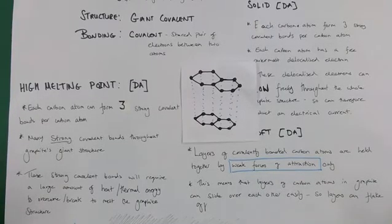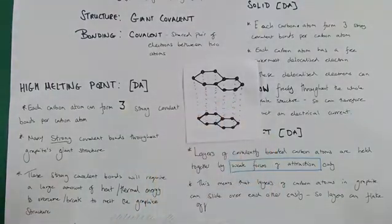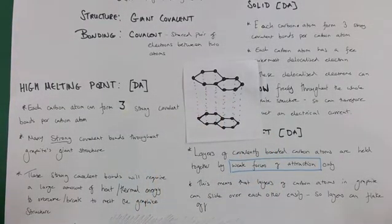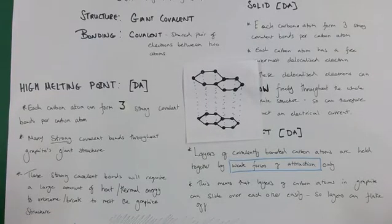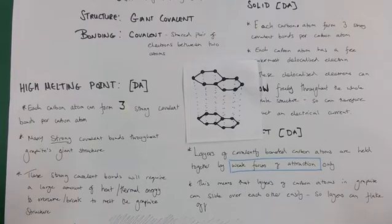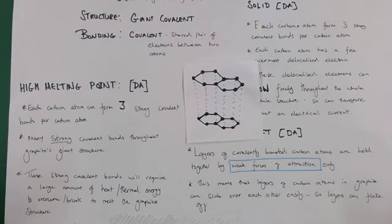Why would that be? That would be because each carbon atom has the capacity to form three strong covalent bonds per carbon atom. Therefore, throughout the giant covalent structure that is graphite, there will be many strong covalent bonds. These strong covalent bonds will require a large amount of heat energy or thermal energy to overcome or break. Therefore, it's quite hard to melt a graphite structure.